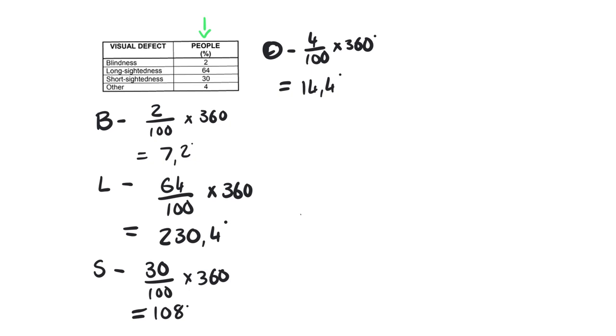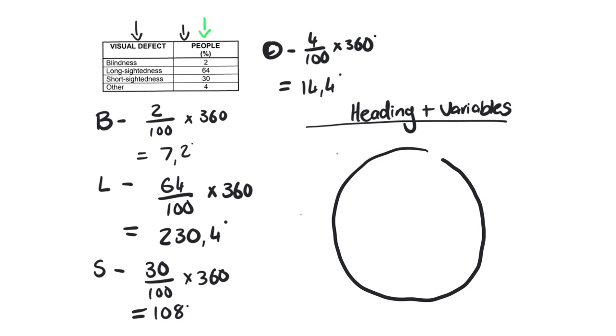Now in terms of drawing the actual pie chart itself, number one, every single pie chart must have a heading and your heading must have all of the variables in it. In this case, the variables are the visual defect and the people percentage. You are now going to take your compass, which means you need a protractor everybody, at the end of the year. You're going to need it. We are going to draw our circle and you need to make sure that you have your compass and protractor with you to do this.